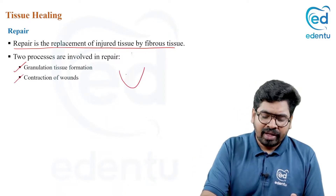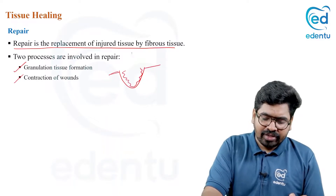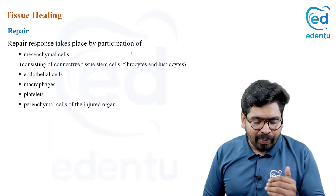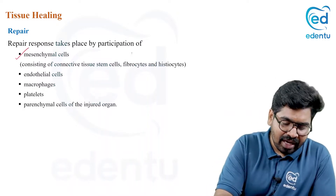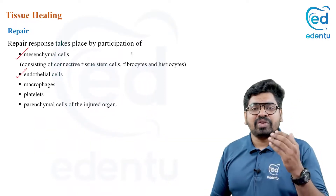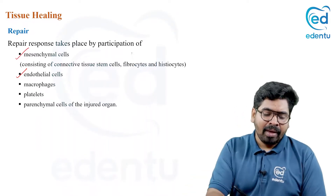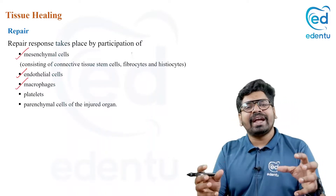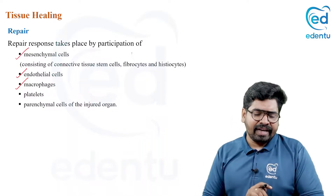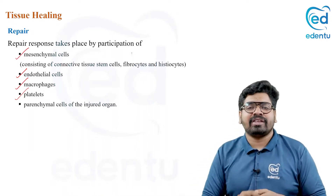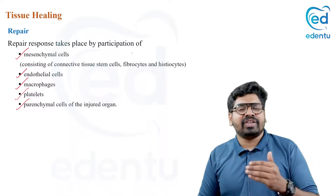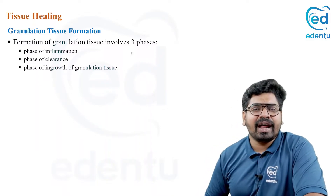In a large wound, granulation tissue forms inside and contraction of the wound closes the defect. Repair occurs by a combination of many cells: mesenchymal cells, connective tissue cells, fibroblasts, histiocytes, and endothelial cells, which help proliferate new blood vessels. Macrophages remove dead cells and debris from the area, keeping the wound clean. Platelets help in hemostasis and release platelet-derived growth factors.